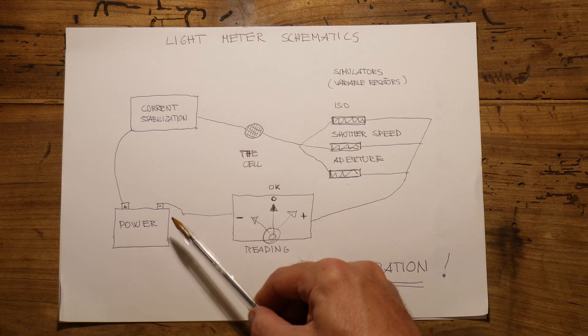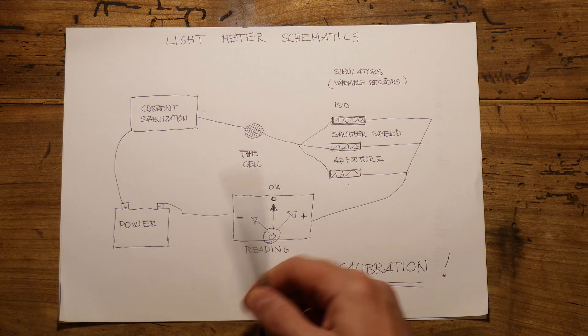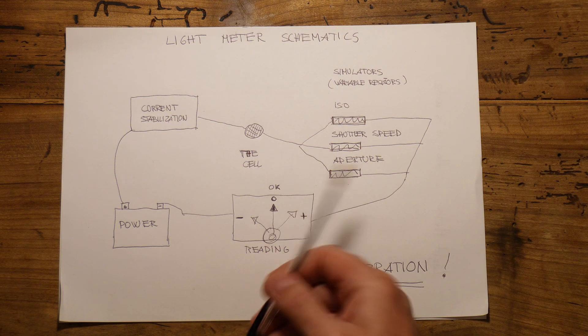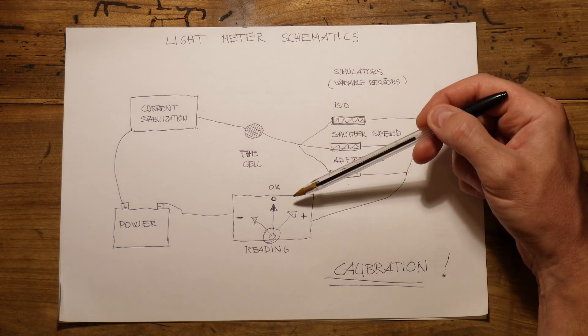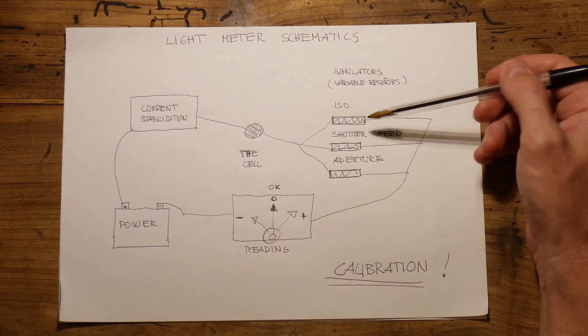Those controls can be combined in one single dial, but they actually act by changing the current in the circuit. Then we have a very important part of the metering system, which is the reading. In old light meters, there was a needle indicating more or less light — which is actually more or less current in the circuit — and then we have a zero point, which means a certain reading.